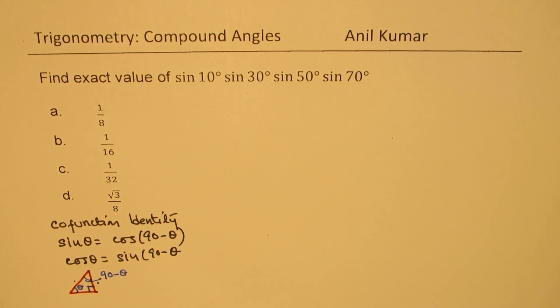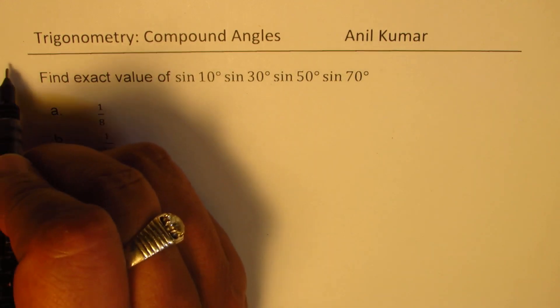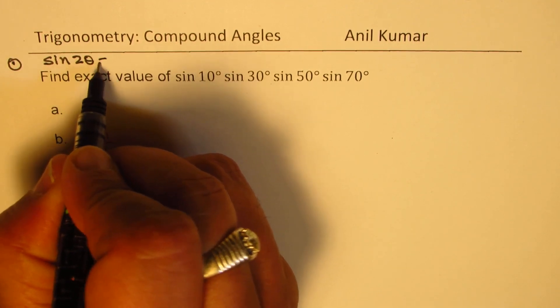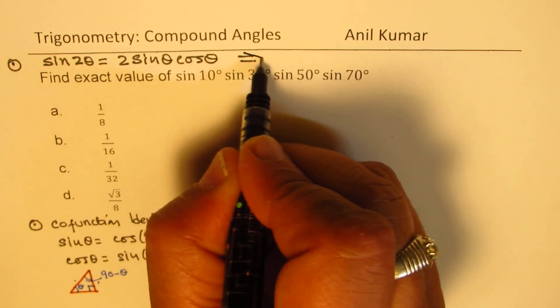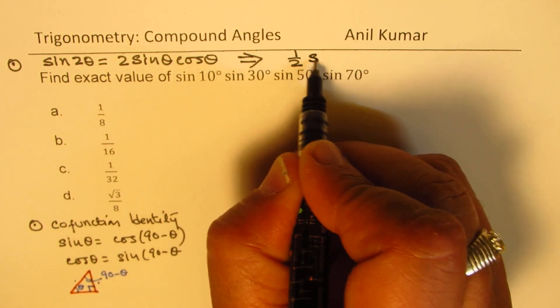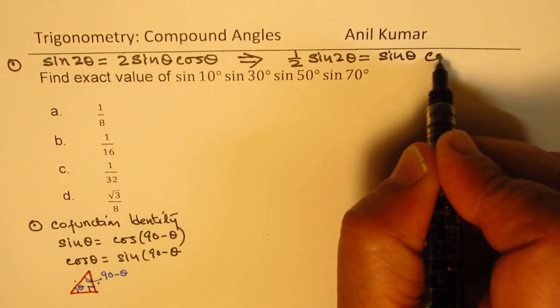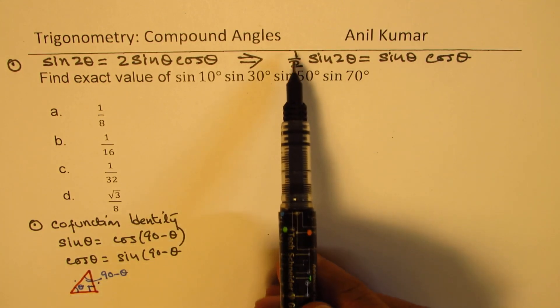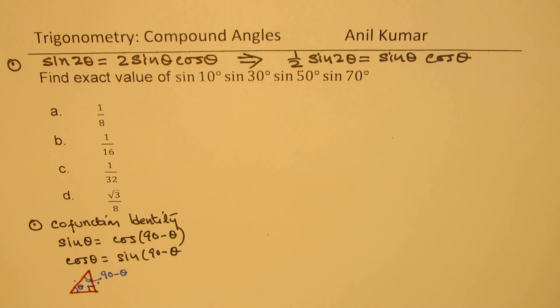So, this is one formula which we are going to use. The other formula is the formula of sine 2 theta, which equals 2 sine theta cos theta. Now, this formula can also be written as half of sine 2 theta equals sine theta cos theta. So, if you have product of sine theta and cos theta, you could always write that as half of sine 2 theta. These are the two formulas which you need to know to solve this question.